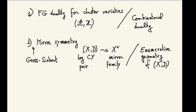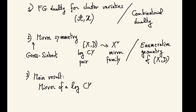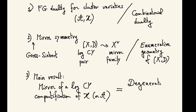The main result will be a precise statement comparing these two stories: if you look at the mirror of a log Calabi-Yau compactification of X or A, you will get some degeneration of A or X. So that is the plan of my talk. I will start by reviewing the cluster side of the story, then say something about the Gross-Siebert mirror construction, and the main point is the comparison between the two stories.